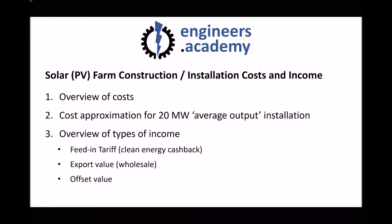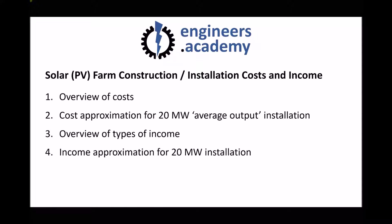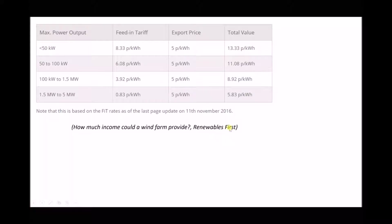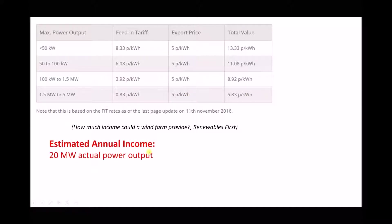We also talked about the offset value, which is for energy companies who both generate and supply electricity — meaning they can produce their own electricity and buy less in the volatile wholesale market. For our approximation, we're going to use the same method and data as before. We had export price data from the Renewables First Consultancy. Those prices were low because they were averages from 2016, whereas the wholesale price has now increased somewhat, so instead of using 5 pence per kilowatt hour, we used 6 pence per kilowatt hour. The first thing we needed to do was determine how much electricity we were going to produce, because kilowatt hours is a measure of energy, not power. We have a 20 megawatt actual average power output.